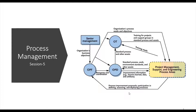Hello, this is session number 5. From this session we will start discussing the relationship between process areas to help you see the organization's view of process improvement, and how process areas depend on the implementation of other process areas. As we have discussed, the process areas are grouped into 4 categories: project management, process management, engineering process areas, and support process areas.